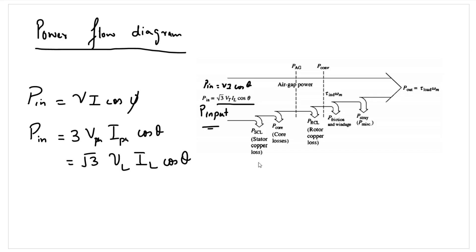When we apply voltage to the stator of the induction motor, a stator current is established — current flows through the stator windings. Depending upon the resistance of these windings, there will be associated I²R losses. These I²R losses represent the copper losses of the stator of the induction motor, known as the stator copper losses. So the first loss in the induction motor takes place in the stator windings in the form of copper losses.